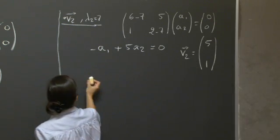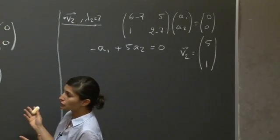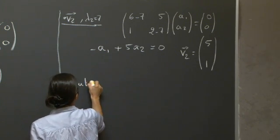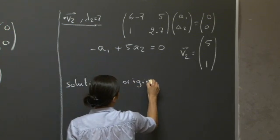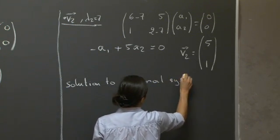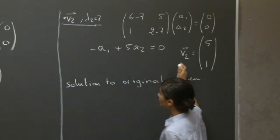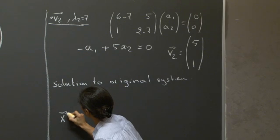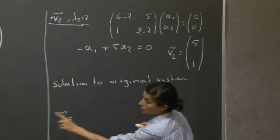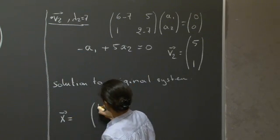So here, basically we can rewrite the solution to the original system as being a linear combination of, so I'm just going to write it in vector form.